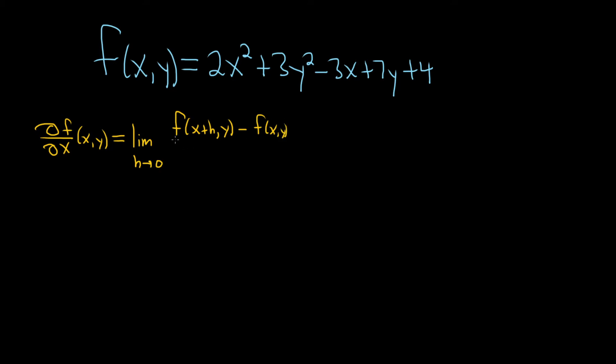So it's like we're using the one variable definition, f of x plus h minus f of x, and we're fixing y. We're treating y as a constant. If you think about it when you do it the regular way, just by using the power rule in this case, you treat all of the y's as constants. So when you take the limit, it's like you're fixing y.